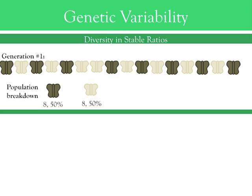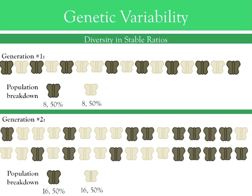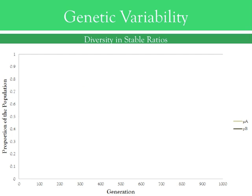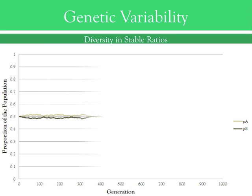Now let's consider the need for differential reproductive success to drive natural selection. Even in a population with diversity, if all the individuals are allowed to survive and reproduce, then no particular phenotype or version of the moth is favored. In this case, the population makeup will remain stable throughout a large number of generations; only random events will cause small changes in the ratios of traits present.